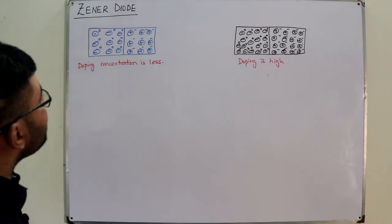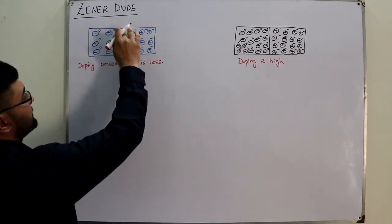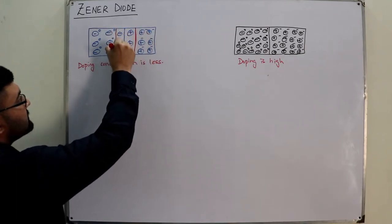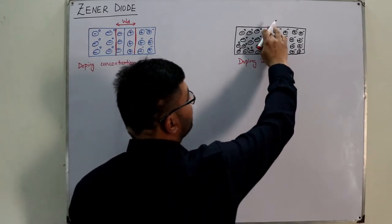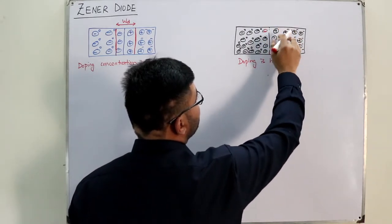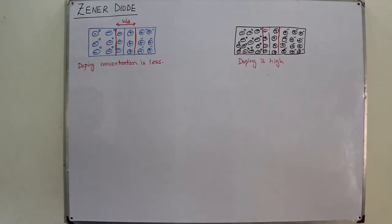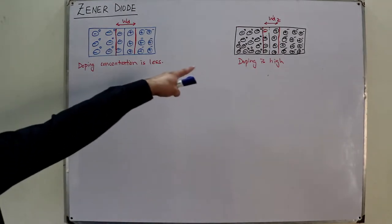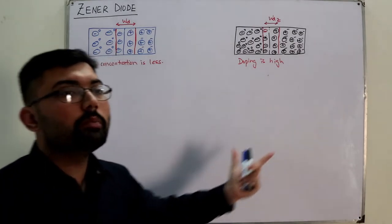When the diode is formed, a depletion layer forms as recombination takes place. For the ordinary p-n junction diode, the width of the depletion layer is Wd. In the Zener diode, due to high doping, recombination also takes place but the resulting depletion layer width Wd_z is less. You can see from the figure that the width is narrower in the Zener diode.